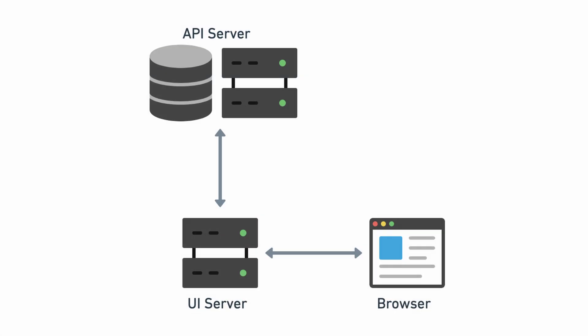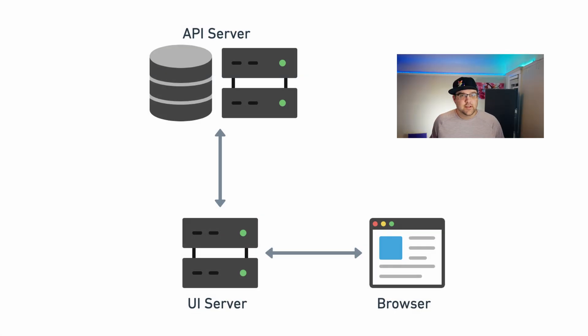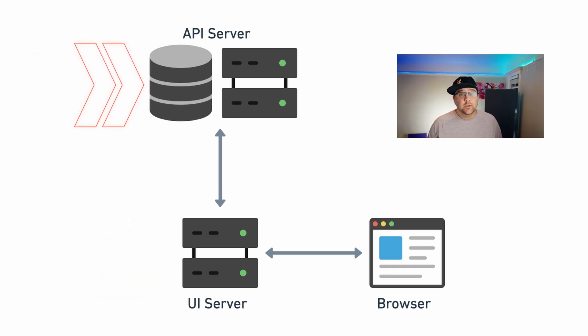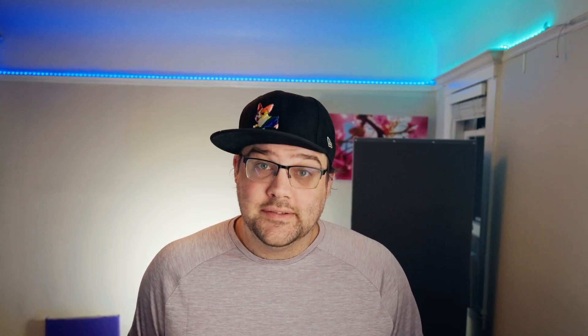Overall, the architecture we're using is an API server, a UI server, and of course the client. The UI server is where we'll be implementing the sessions, while the API server is where we'll deal with Cognito and interfacing with anything we need to do with AWS.